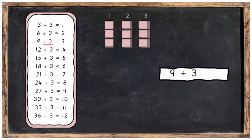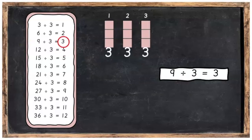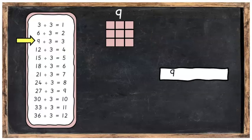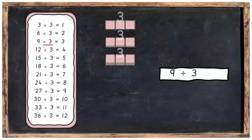9 divided into 3 equal parts, you're going to get 3 in each part. And 9 divided into 3's will give you also 3 in each part.